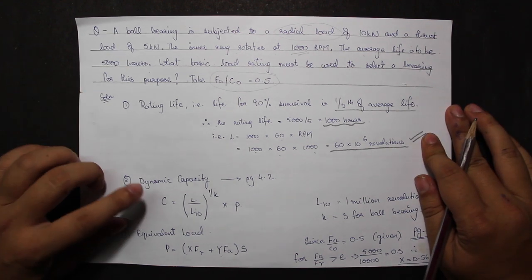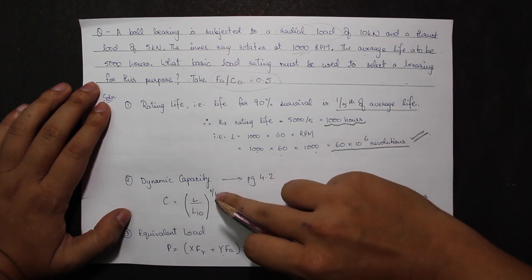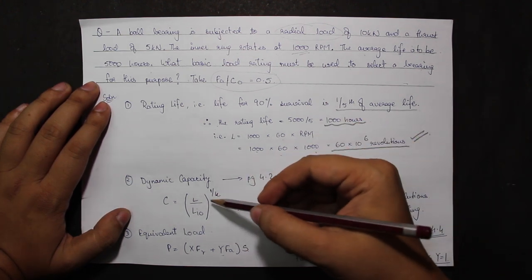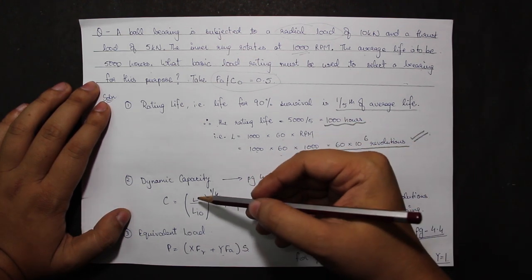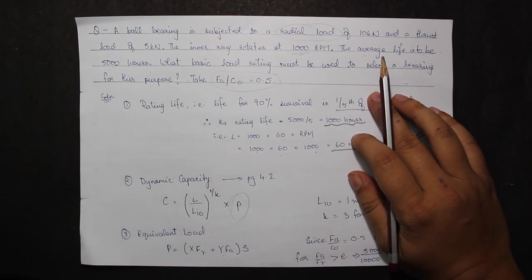To calculate the dynamic capacity, I have this formula on page 4.2. Some data books have the formula incorrectly written in them. The equivalent load or P is multiplied and it is not in the power. So the formula is like this.